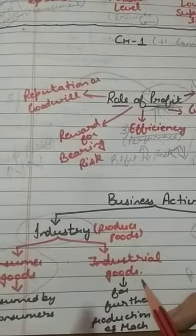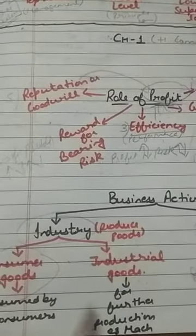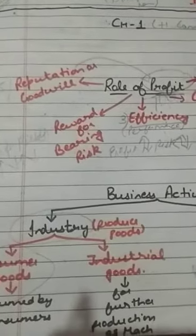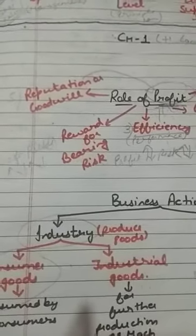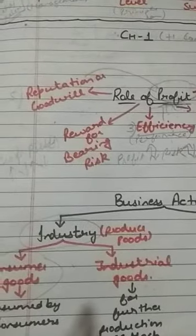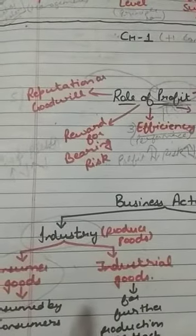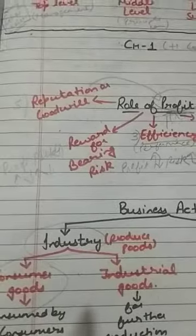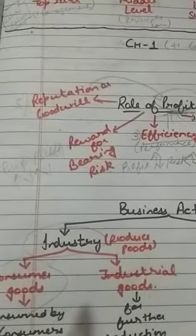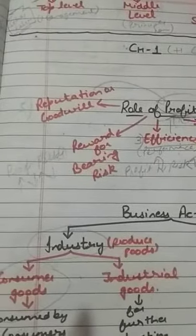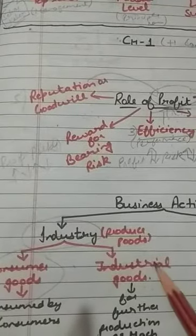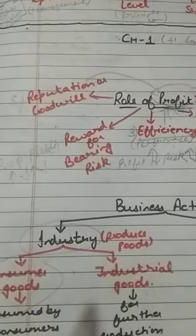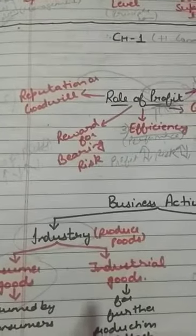Industrial goods are those goods which are used for further production. For example, take the example of machinery. One businessman has purchased machinery from the market — he will use that machinery to produce more products. So industrial goods are those goods used for the further production of various types of goods and services in the market.